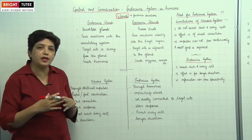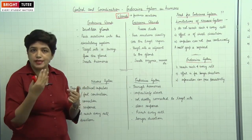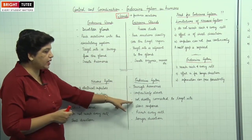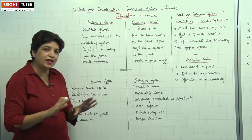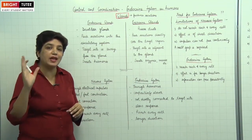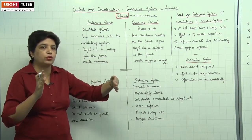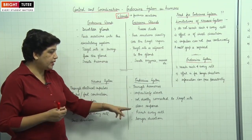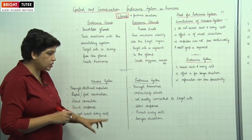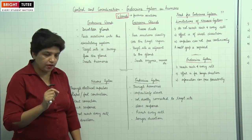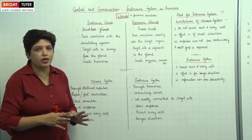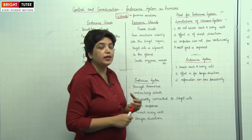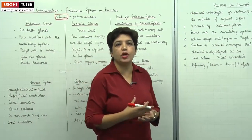In the nervous system, there is a direct connection between the nerves and the target organ — for example, in the reflex arc, the nerves end directly on the muscles. But in the endocrine system, the hormones are not in direct contact with the target sites. The endocrine glands are isolated organs; their secretions travel through the blood to reach the target site. So there is no direct connection between the endocrine glands and target sites. The response is comparatively slow, but hormones reach each and every cell of the body, and the effect produced is for a longer duration.